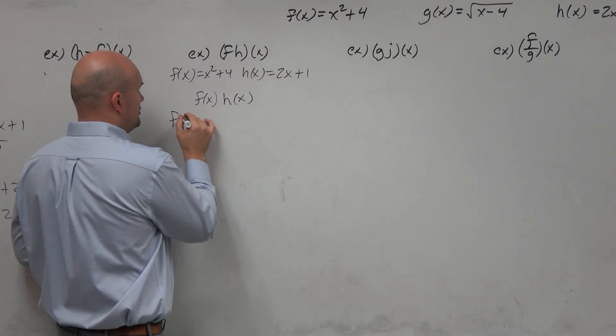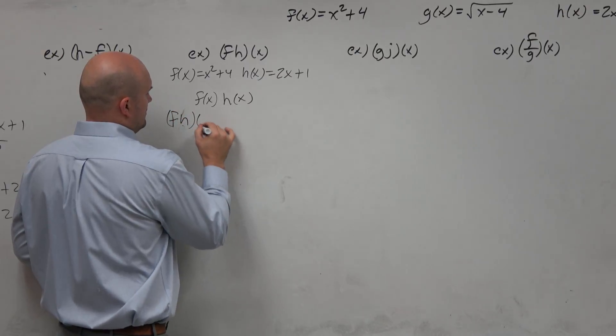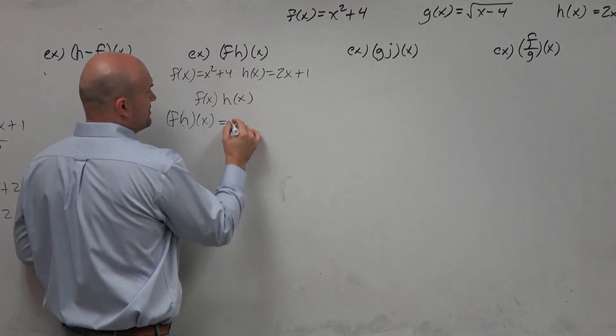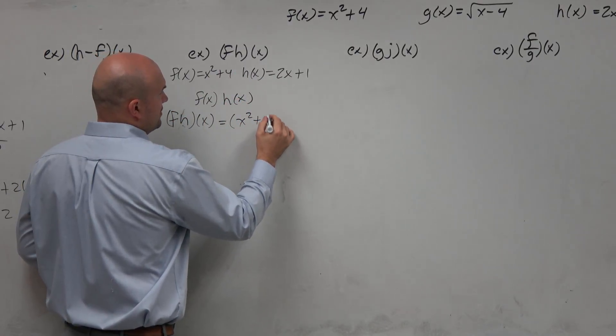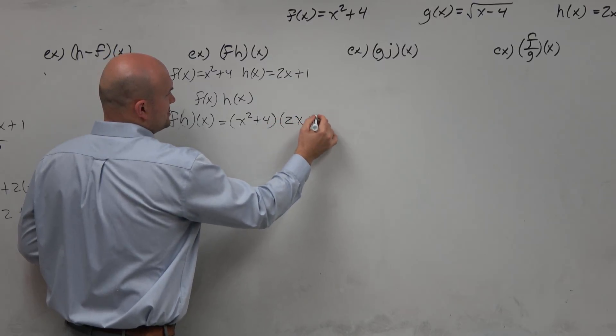So all you're doing is, I would use parentheses, x squared plus 4 times 2x plus 1.